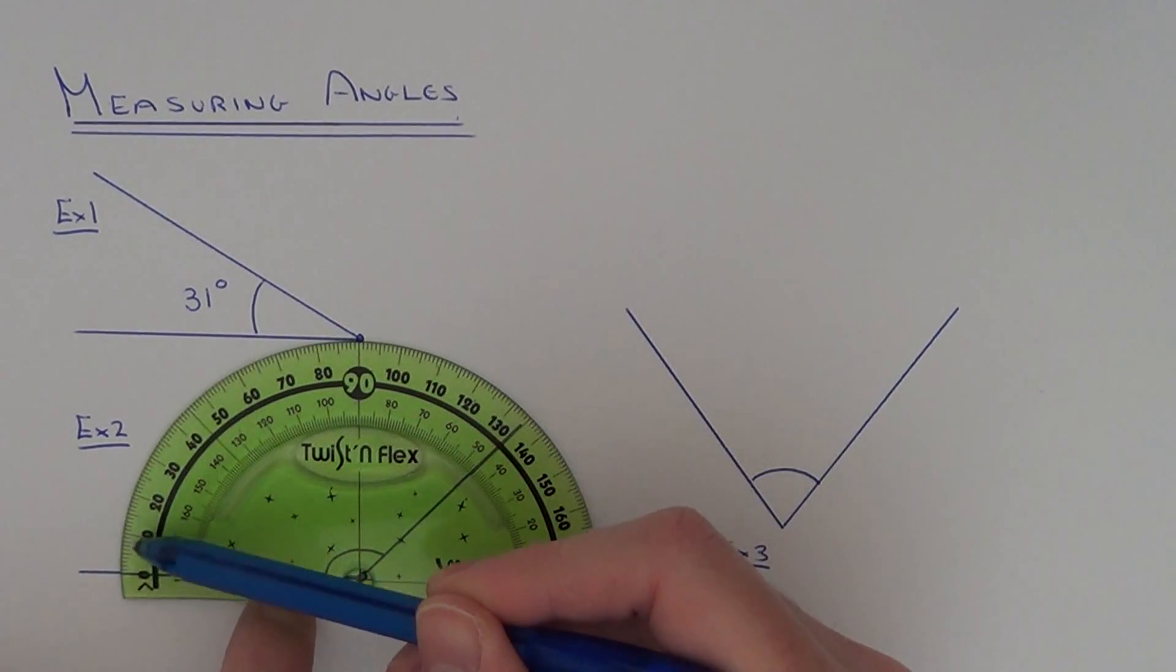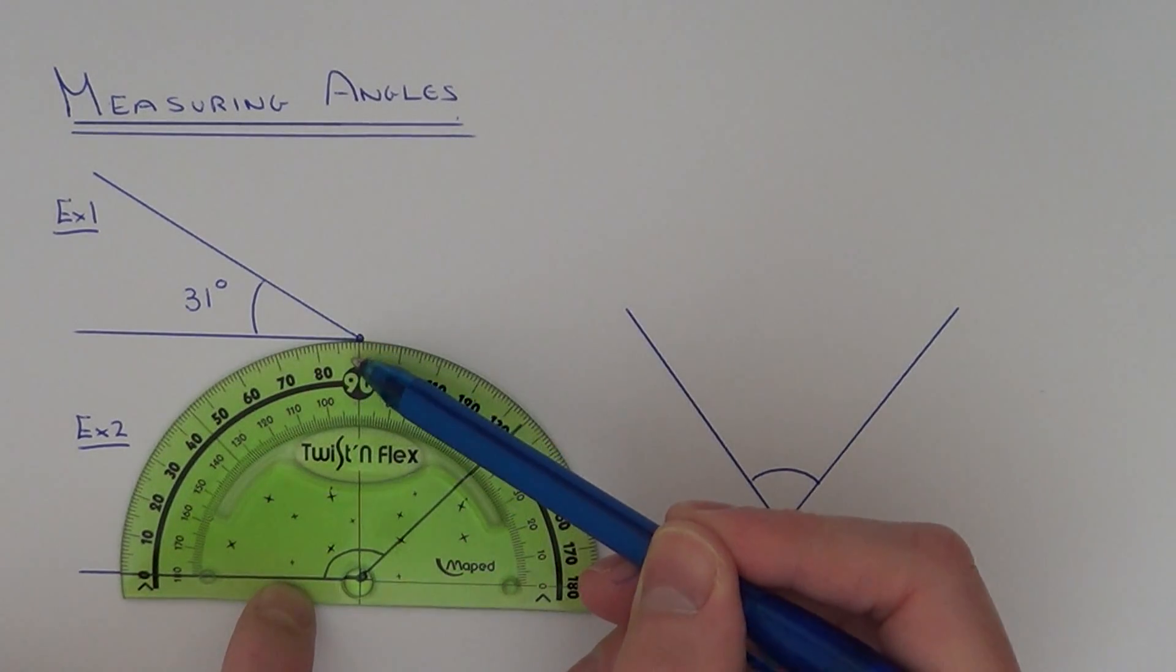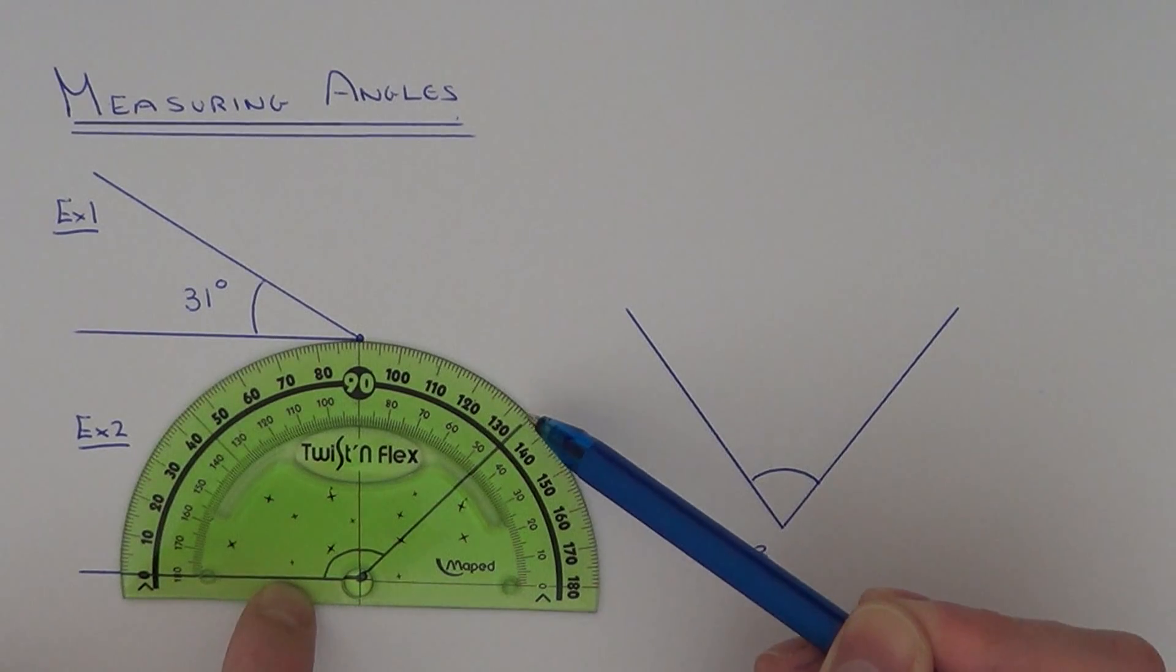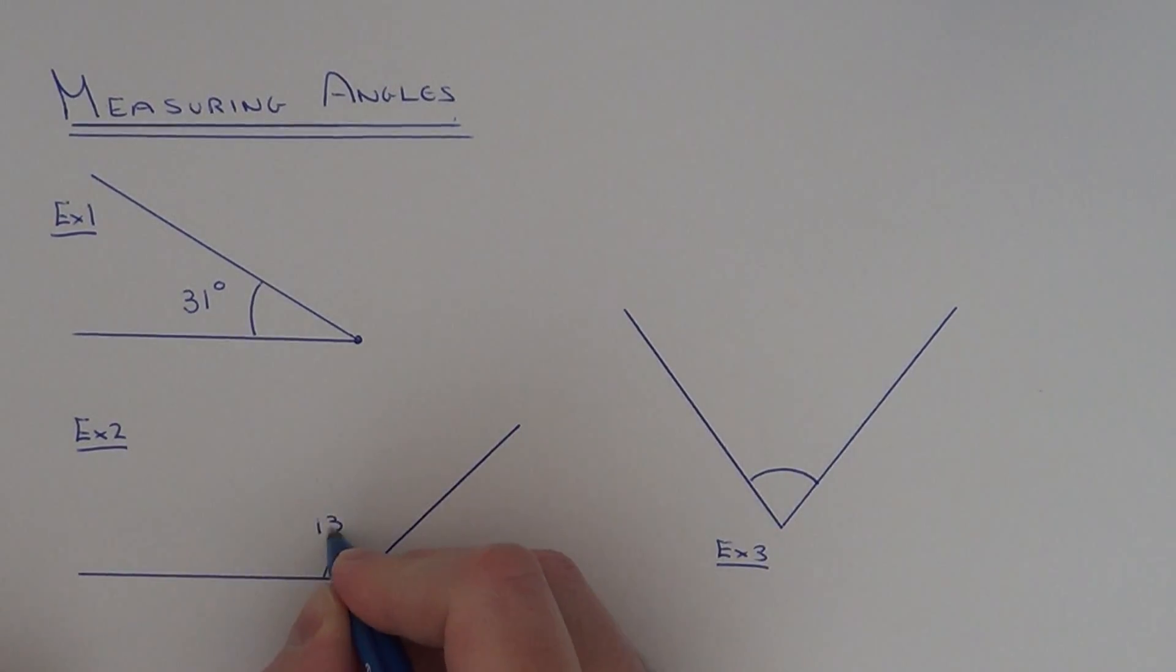So let's follow it around: 10, 20, 30, 40, 50, 60, 70, 80, 90, 100, 110, 120, 130, and it's just about 135 degrees. So again let's just write that down.